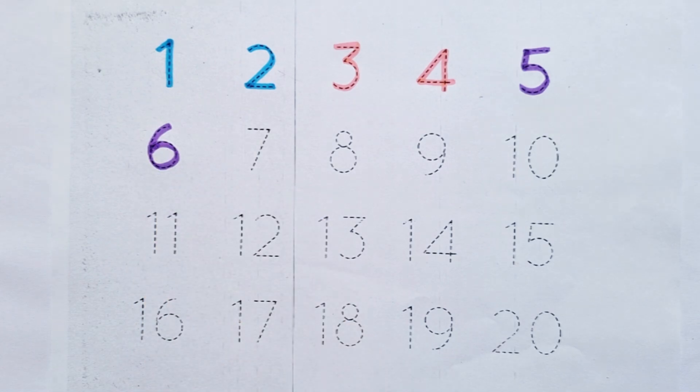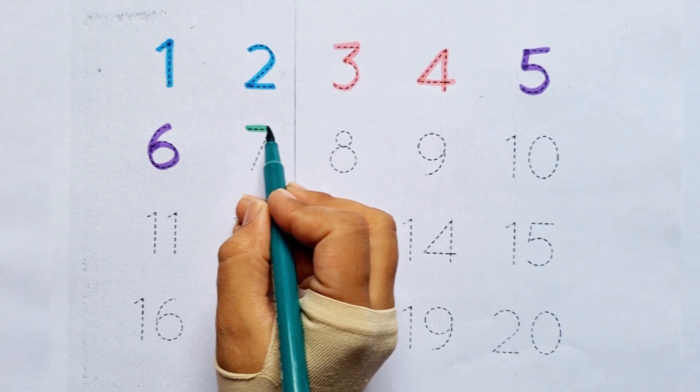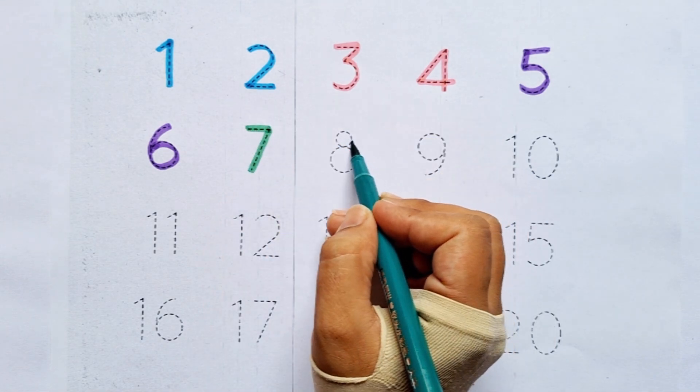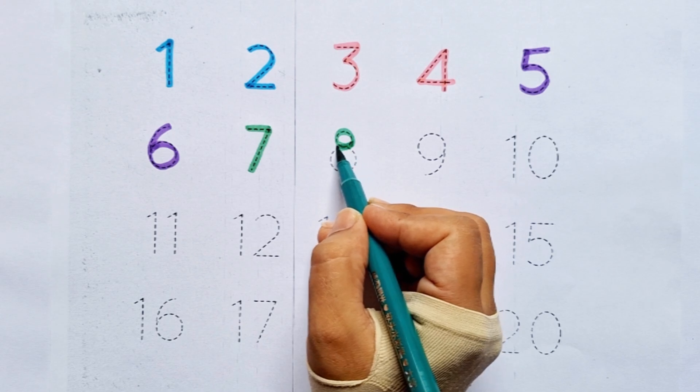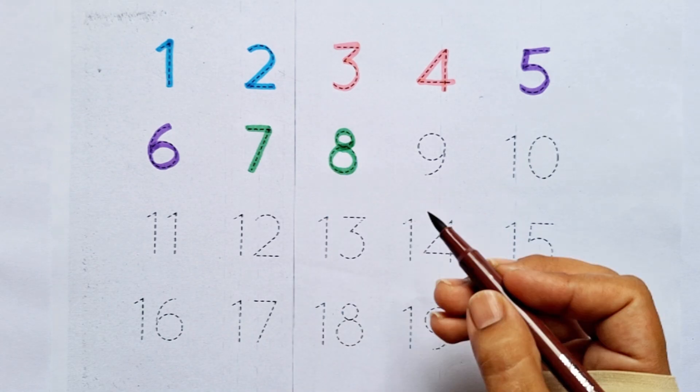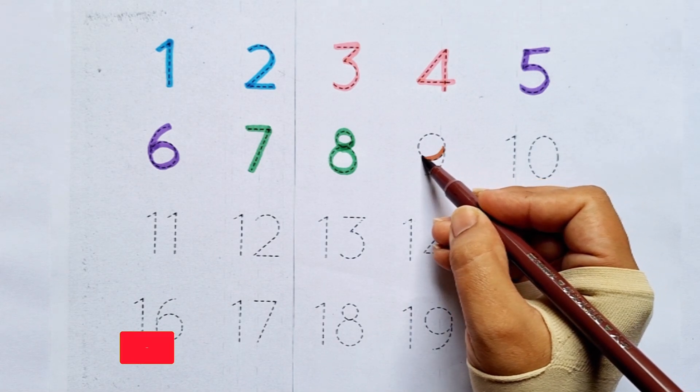Seven. This is seven. After six comes seven. Eight. This is eight. After seven comes eight. Nine. This is nine.